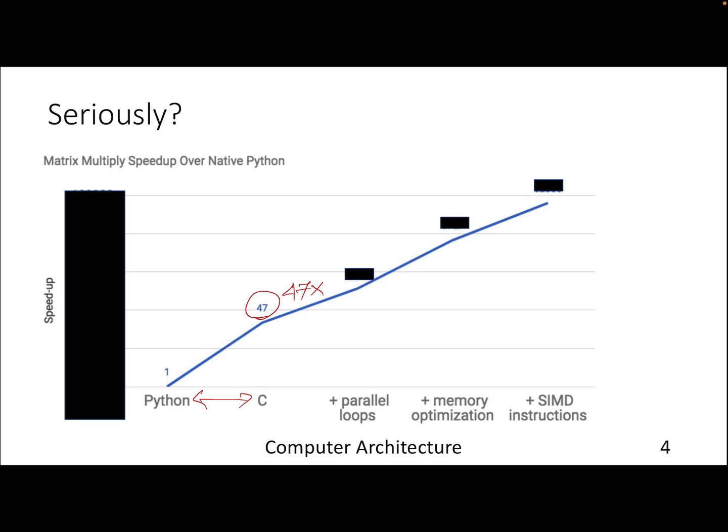That's the gap between C and Python. If you go one step ahead and start writing multi-threaded code for your matrix multiplication with parallel loops and multiple threads executing concurrently, this gives you 366x.